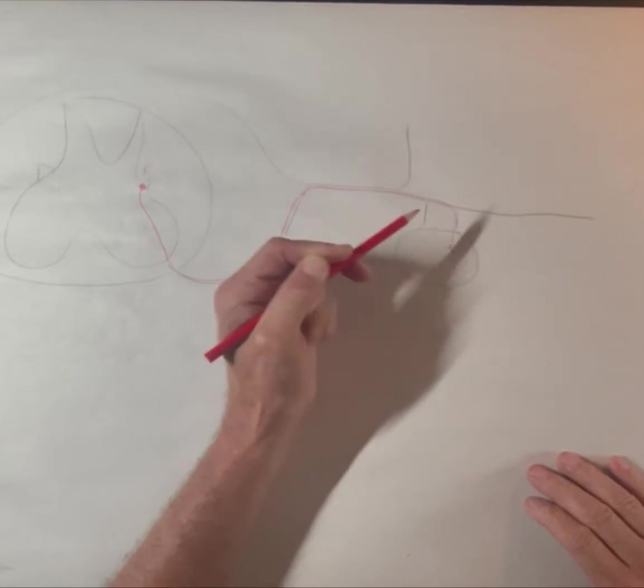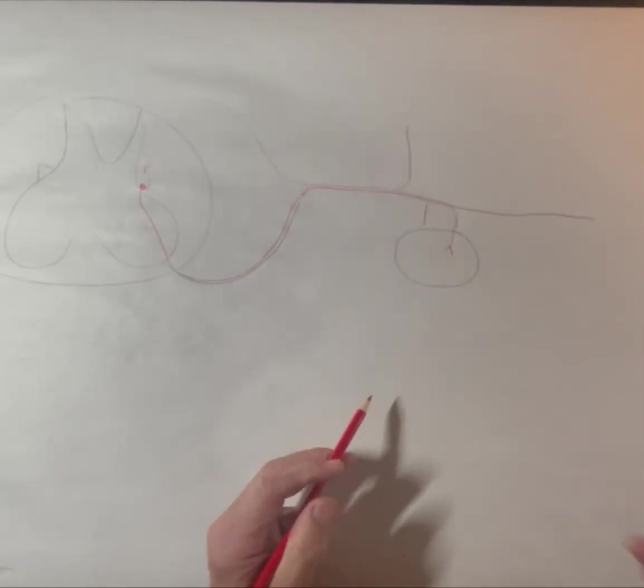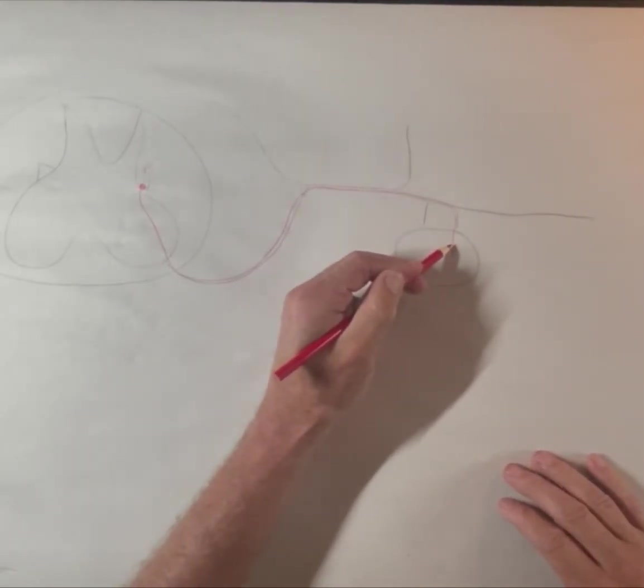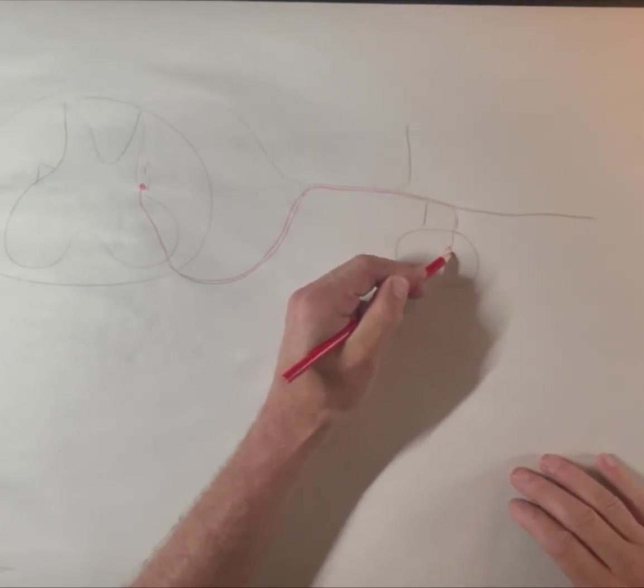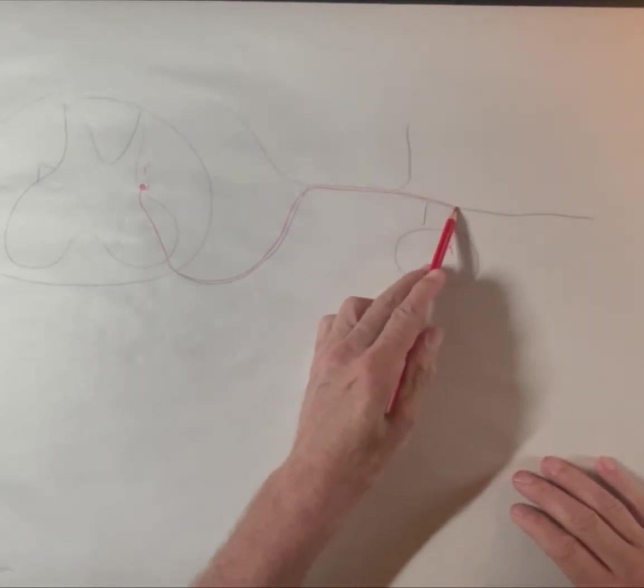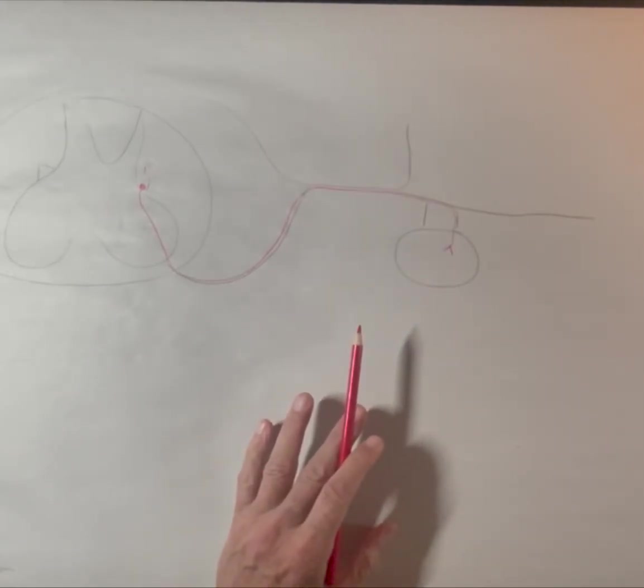So then this nerve is going to come up into one of the ganglia in the chain ganglia. And we're just going to do this most simple method, this most simple route where it synapses immediately. So it enters through the white ramus into the sympathetic chain.